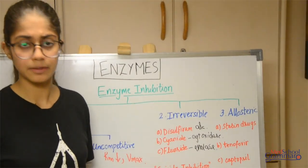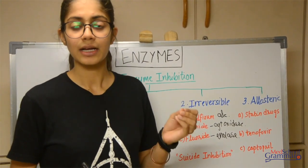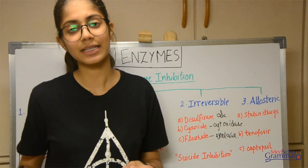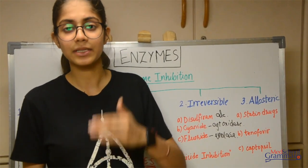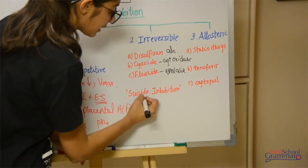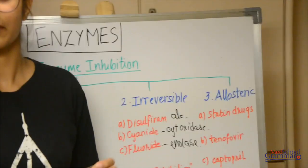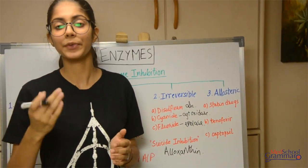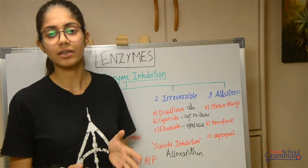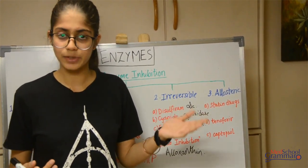Now there is a term called suicide inhibition. Suicide inhibition is a special type of irreversible inhibition where a particular inhibitor combines with the enzyme and then the enzyme itself becomes a more enhanced inhibitor. So it is not the inhibitor itself that is causing the inhibition — it is the inhibitor-enzyme complex that is further inhibiting the enzyme itself. An example of this is allopurinol. There is an enzyme called xanthine oxidase present in purine degradation. Allopurinol is converted to alloxanthine, which further inhibits xanthine oxidase, and that prevents the formation of uric acid so the degradation of purines is inhibited.